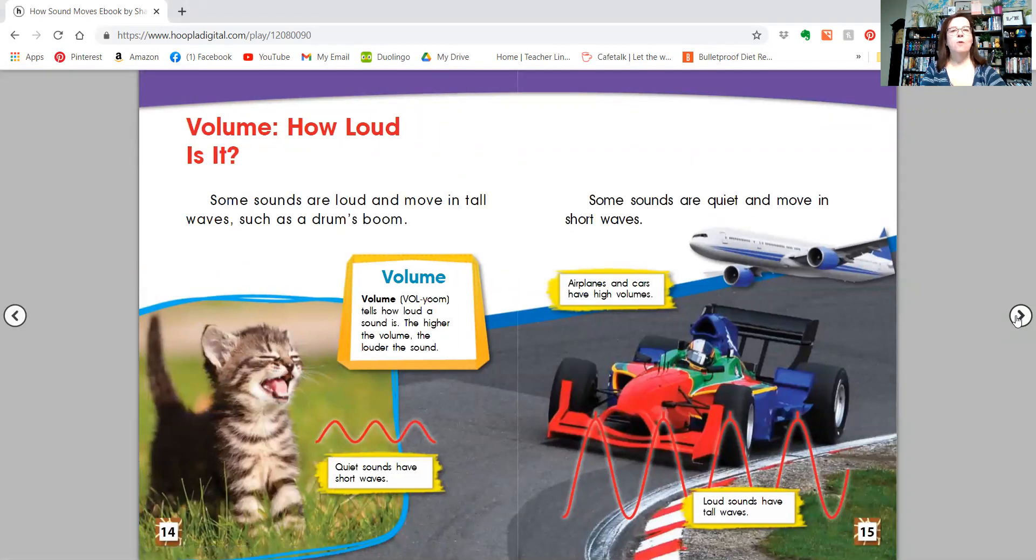Volume. How loud is it? Some sounds are loud and move in tall waves, such as a drum's boom. Volume tells how loud a sound is. The higher the volume, the louder the sound. Quiet sounds have short waves.